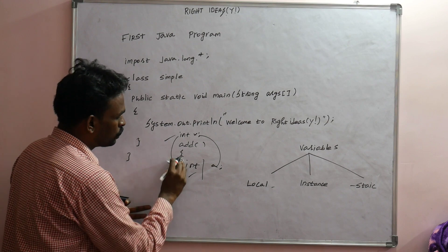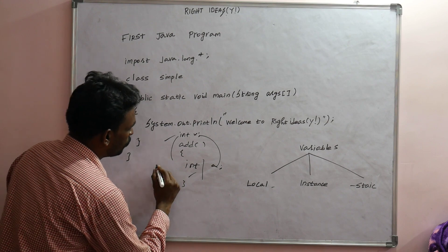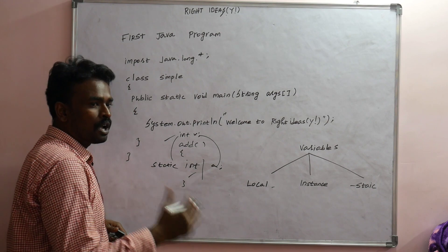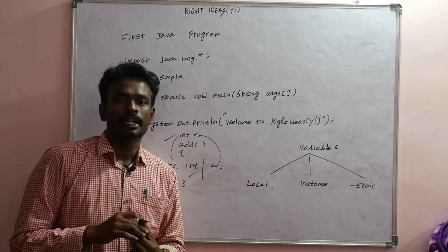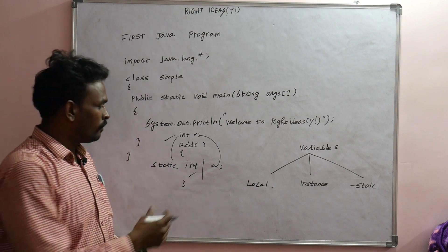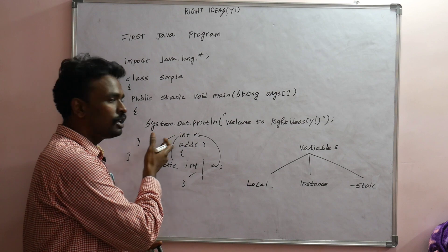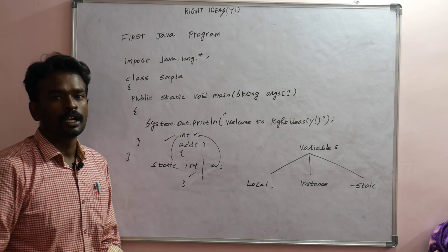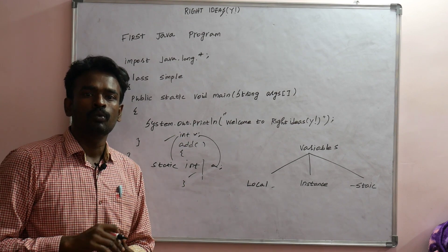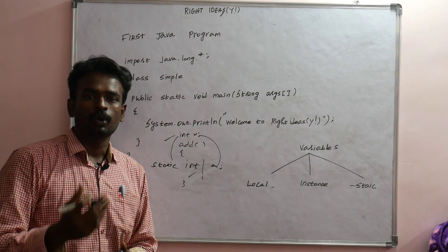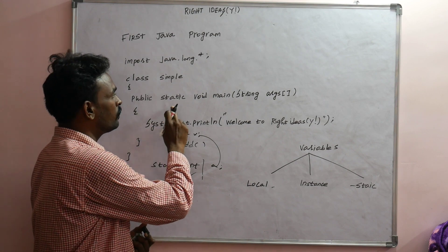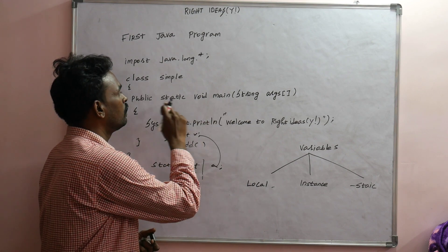The purpose of a static variable is to retain a value across function calls. When you create a new program, the static variable is created. The function will create a static variable, and the main function — public static void main — will invoke it.